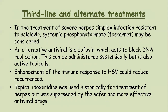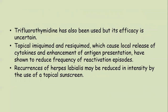Third-line and alternate treatment: in severe herpes simplex infection resistant to acyclovir, systemic phosphonoformate (foscarnet) may be considered. The alternate antiviral cidofovir acts by blocking DNA replication and can be administered systemically or topically. Enhancement of immune response could reduce recurrence. Topical IDOX-uridine was historically used but has been superseded by safer, more effective antiviral drugs. Trifluorothymidine is also used but its efficacy is uncertain. Topical imiquimod and resiquimod, which cause local release of cytokines and enhance antigen presentation, have been shown to reduce frequency of reactivation episodes. Recurrence of herpes labialis may be reduced in intensity by use of topical sunscreens.